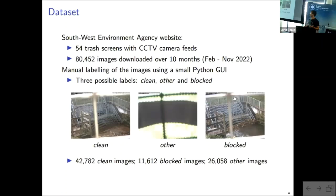And I progressively labeled all of these images using a small interface. And an image would have one of three labels. So clean, if the trash screen is actually clean, like here on the left. Other, if I didn't know what was going on. Like here, for example, someone has put a silver jacket on the camera. So we didn't know what's going on. And finally, if we see some debris at the location, then I labeled it as blocked. And so at the end, I had about 40,000 clean images, 11,000 blocked ones, and 26,000 for which I wasn't sure.